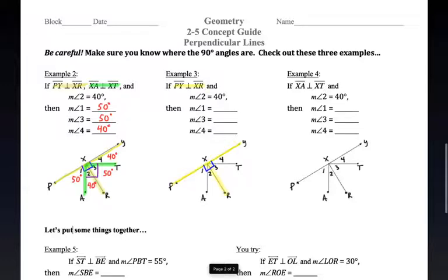But what if it only tells us that PY is perpendicular to XR here in example three? Well, that means I got these right angles here, but it does not mean that angle AXT is the right angle. So when angle four or angle two is equal to 40, I can figure out that angle one is equal to 50, but those aren't complements. I don't know what angle three is here. I don't know what angle three and therefore I don't know what angle four is. I do know that they are complements. I know they add up to equal 90, but I don't know specifically what they are from the information that's given.